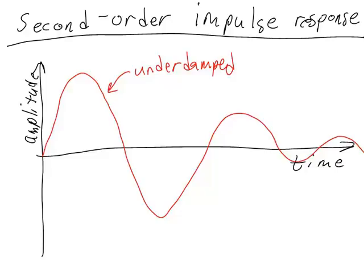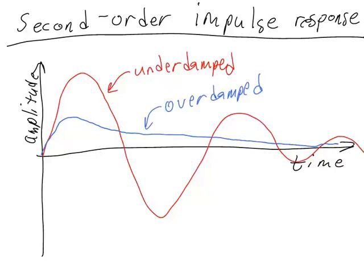Besides being underdamped, another way that the system could respond is called overdamped. If a system is overdamped, the response does not have any oscillations and it very slowly approaches its settling point. In the impulse response, the settling point is always zero — the steady state value is always zero. In the underdamped case, the system oscillates around zero before coming to rest. In the overdamped case, the system initially responds and then slowly approaches the steady state value.